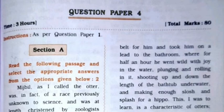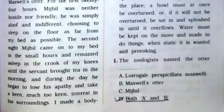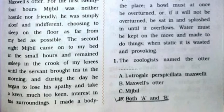Section A: you need to read the passage and answer the given questions below. The first question is about the zoologist who named the otter. The answer is option D — both A and B: Lutrogale Perspicillata Maxwell and Maxwell's otter.